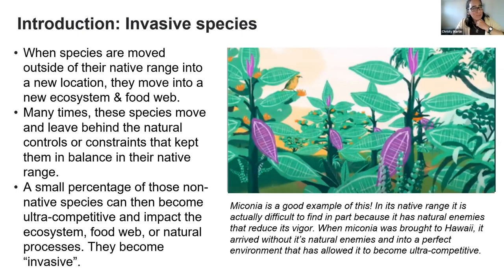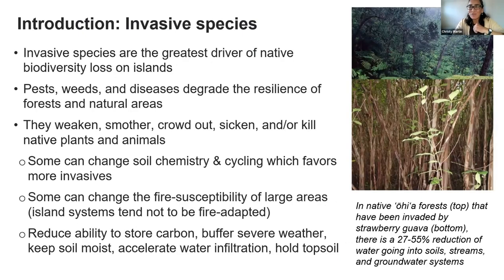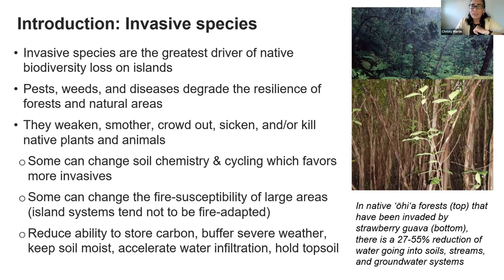Invasive species are the greatest driver of native biodiversity loss on islands. In Hawaii, it's not pollution or building that's driving native species to extinction — it's invasives. Pests, weeds, and diseases degrade the resilience of forests and natural areas to withstand change. They can weaken, smother, crowd out, sicken, or even kill native plants and animals. I always think about storms and albizia trees — weak-limbed trees with a tendency to spontaneously drop limbs during high wind events — they can obviously harm us.